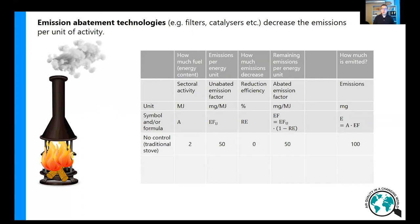The abated emission factor is the emission factor after some emission abatement technology is applied. For our case, when there was no control and no abatement technology involved, the reduction efficiency is zero percent, and then the abated emission factor equals the unabated one. This is how the emissions are calculated for a single technological solution — it's the sectoral activity multiplied by the abated emission factor.